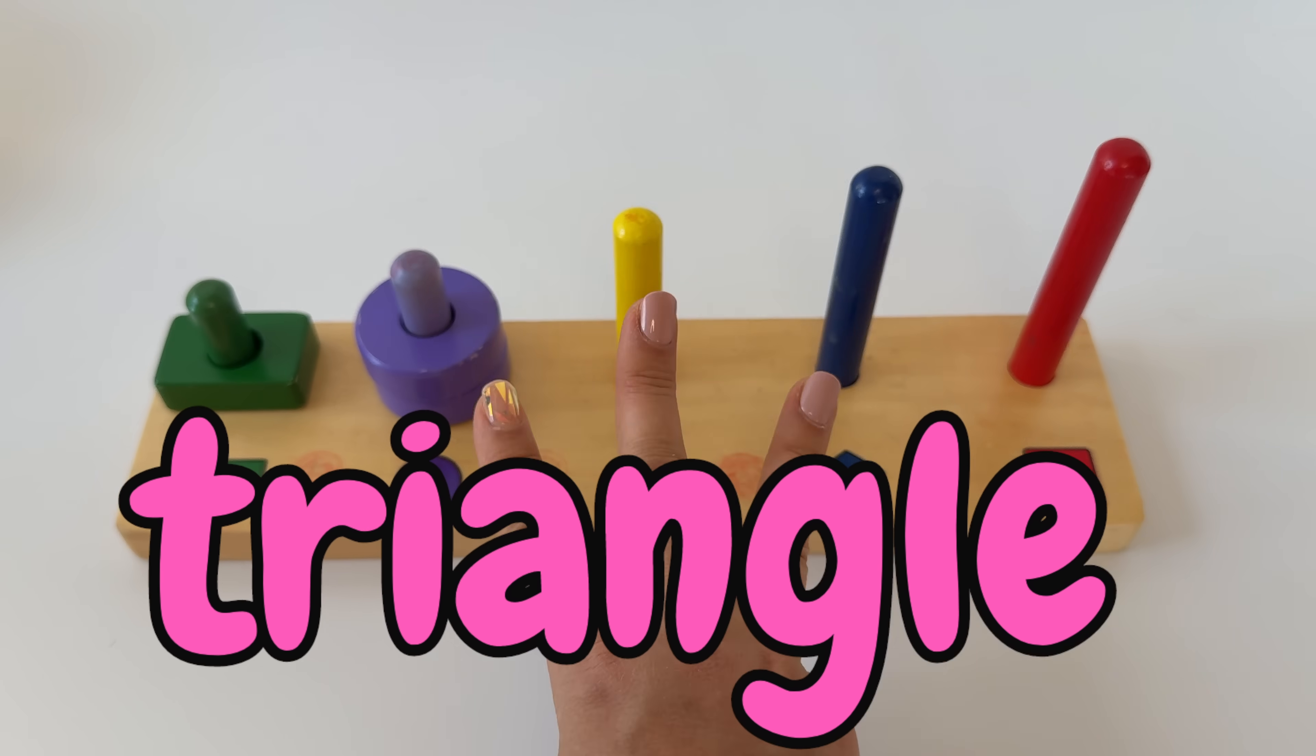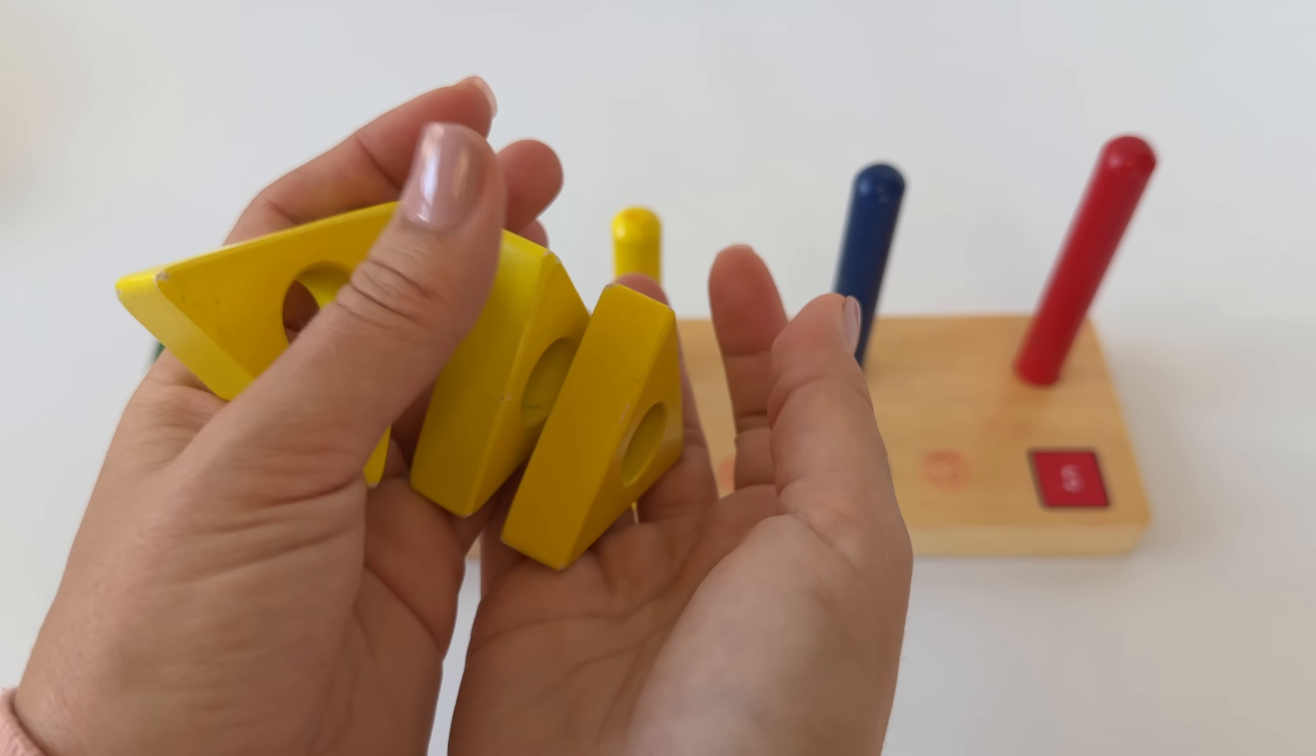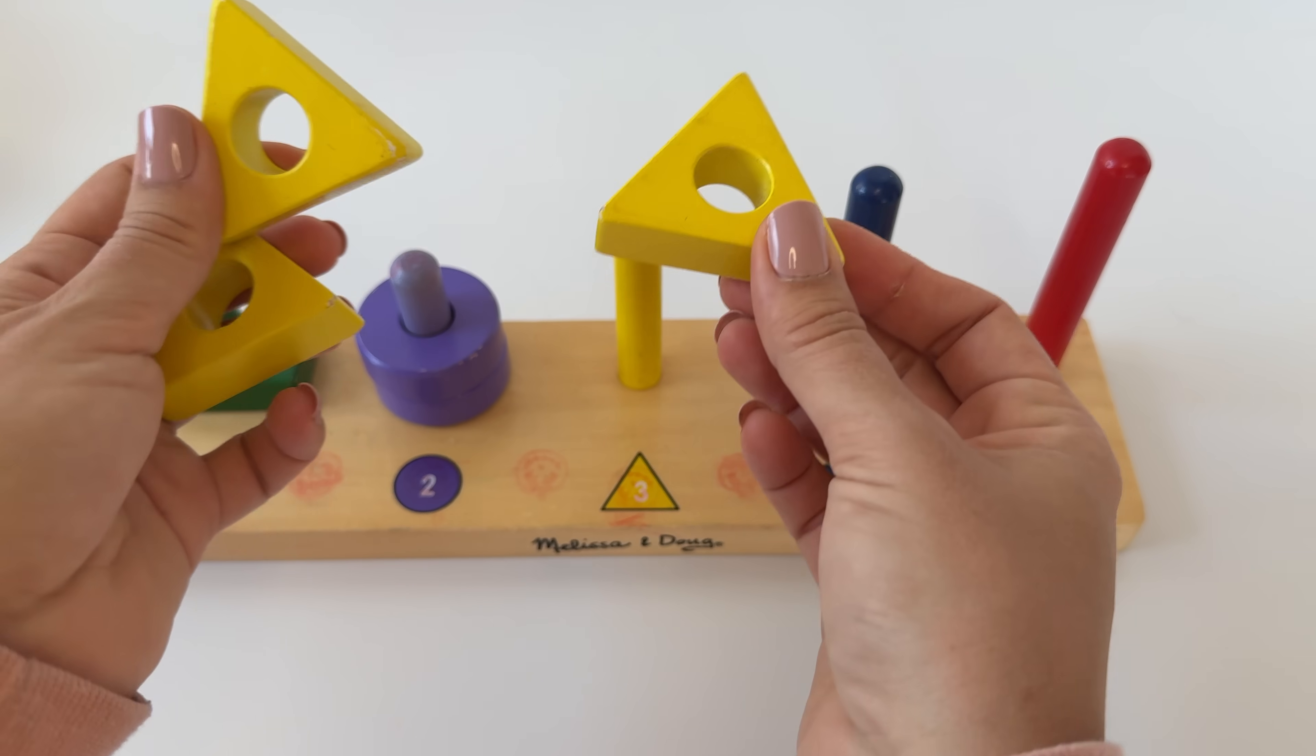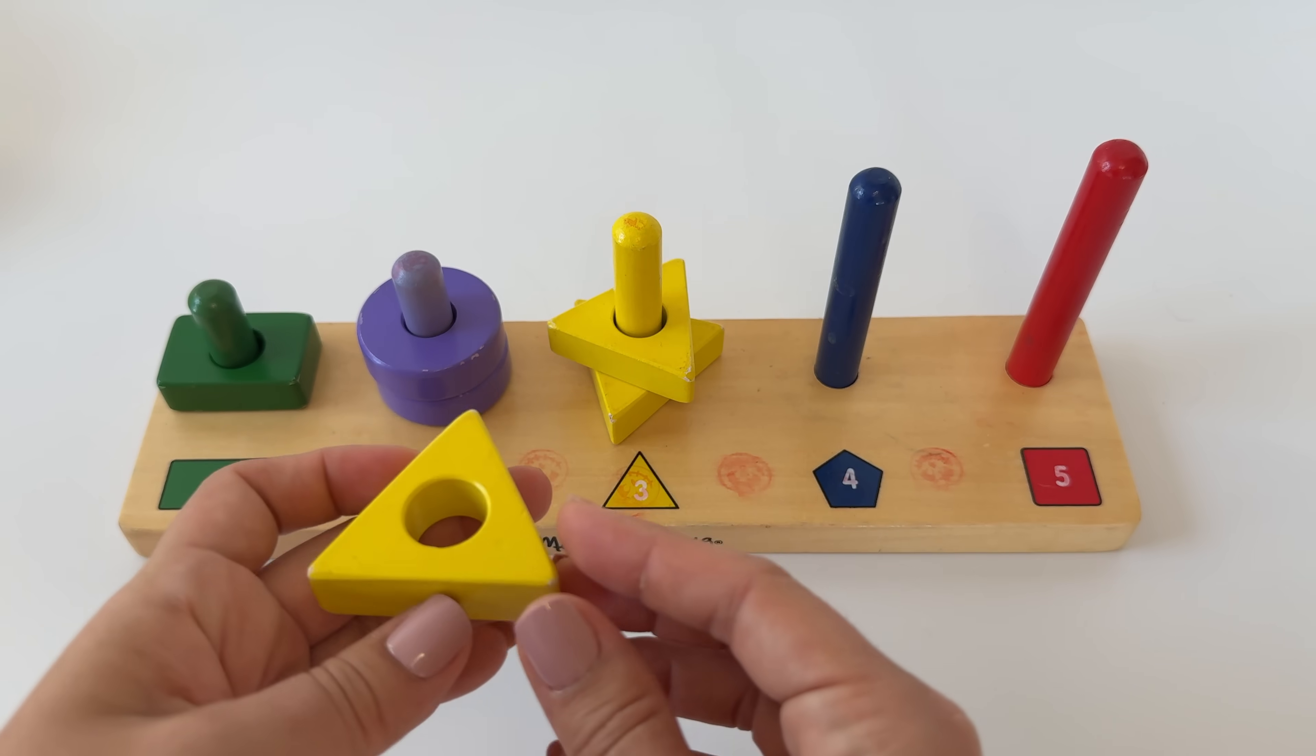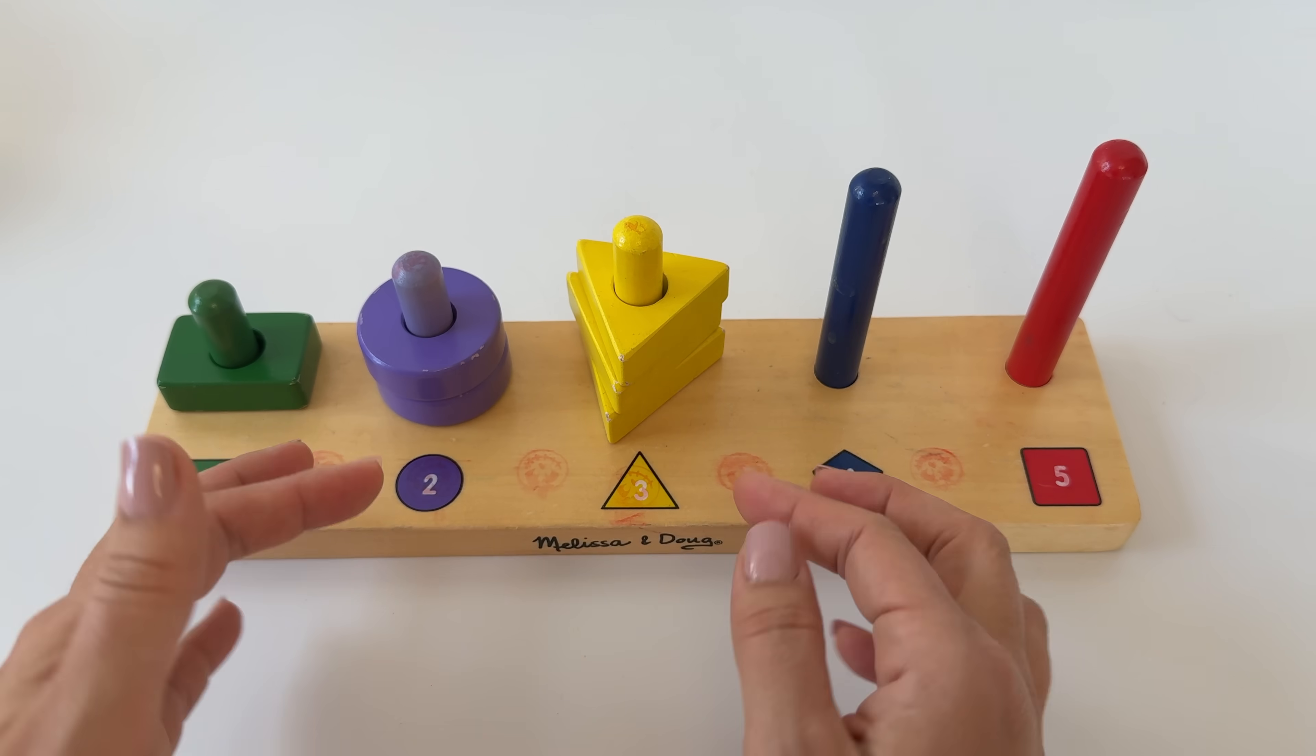So I need three yellow triangles. Here they are. One, two, three. Let's put them on the rod. One, two, three. And let's try making a triangle.